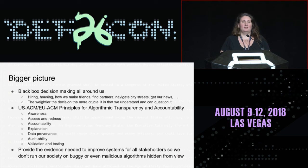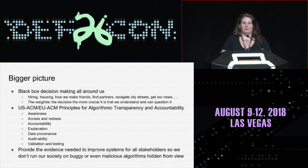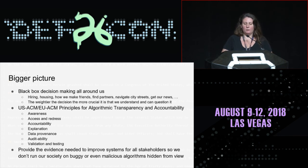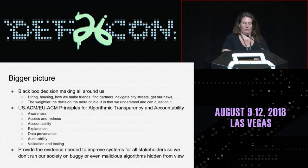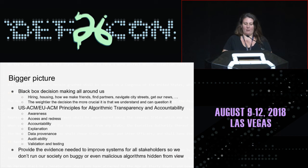The big picture is that black box decision making is happening all around us, and our community could do a lot to bust open those black boxes, compare them to one another, or fight for accountability and transparency. The ACM's tech policy group came out with a set of principles for algorithmic accountability and transparency — that could be a place to start. If you're involved in building software systems, you could point your team and your boss to these professional ethics guidelines that say we should be building in awareness, access and redress, accountability, explanation, data provenance, auditability, validation and testing.